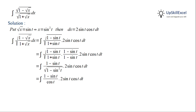The cos t in numerator and denominator cancels out, giving us the integration of 2 sin t(1 − sin t) dt, which can also be written as the integration of 2 sin t − 2 sin²t dt.